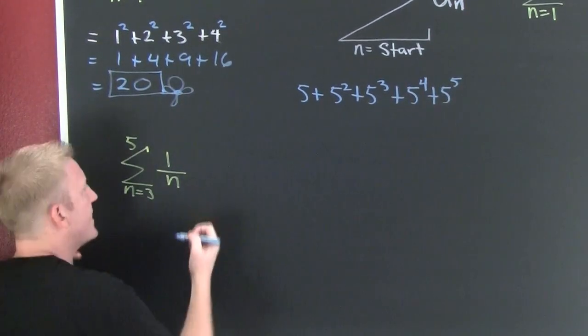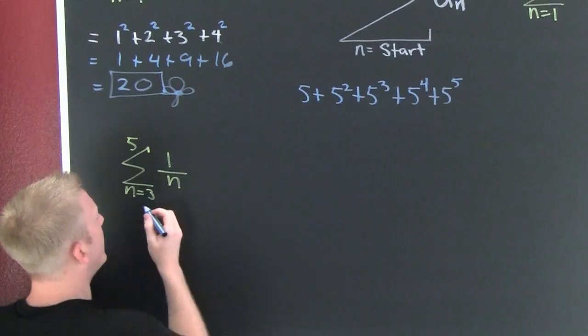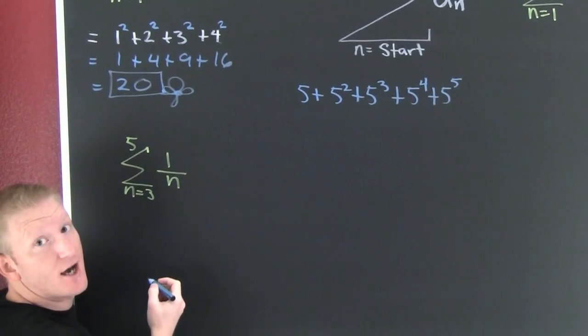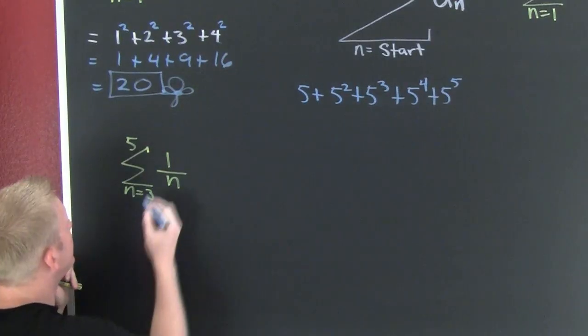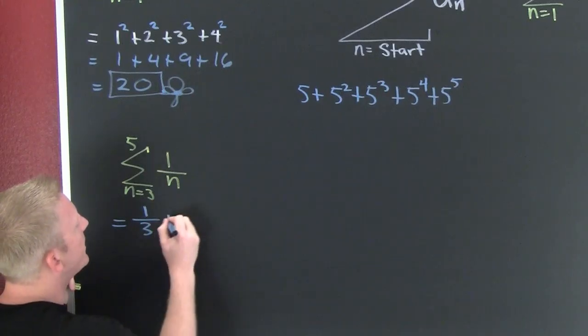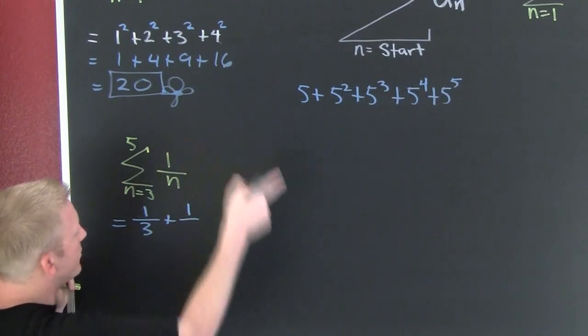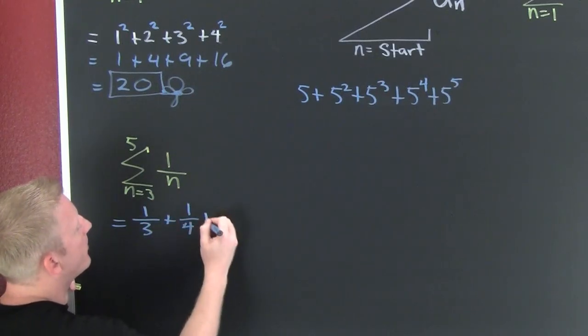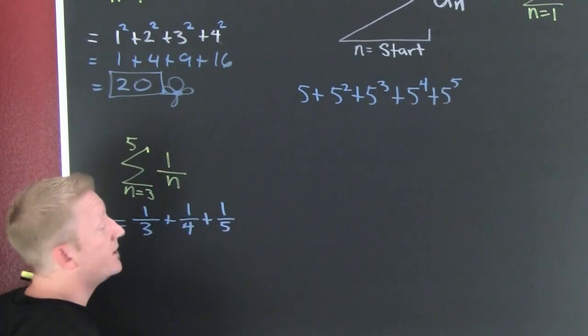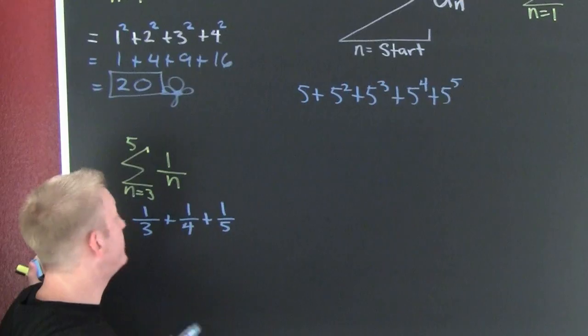I put this next example in here so that we could talk about what happens when my index is starting at a value that's not one. So here we go. This is going to be the sum of one over three plus one over four plus one over five.